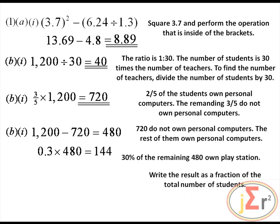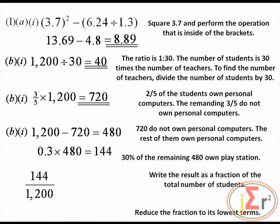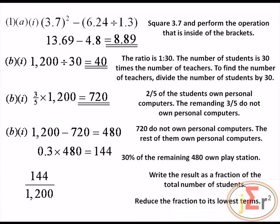Write the result as a fraction of the total number of students, expressed in its lowest terms. The total number of students is 1,200, and 144 own PlayStations. Reducing the fraction 144 over 1,200 to its lowest terms, we get 3 over 25.